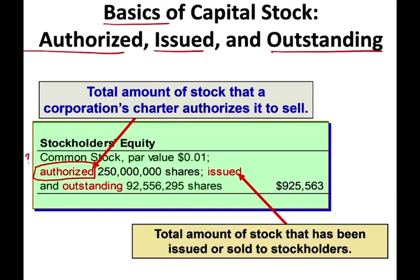What is this number? Think about the word authorized — authorized to do what? They are authorized to sell them. For example, this company here has 250 million shares, so they have 250 million shares that they can issue. Of these, shares issued and outstanding means they sold them to the public. Of the 250 million, they have approximately 92.5 million shares issued and outstanding.